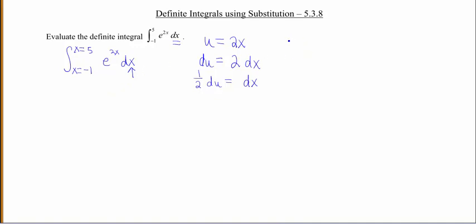So if x is gonna be negative 1, if I plug that into my u substitution here, what's our u gonna be? Well, u's gonna be 2 times negative 1, which is gonna give us negative 2.